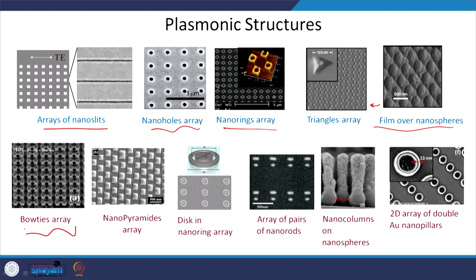A bowtie antenna has two sharp triangular structures facing each other, giving very high electromagnetic field between them. Nano pyramids also have enhanced electromagnetic fields at the tips. Disks in nano ring arrays are another option. The key point is that it is possible to develop a variety of nanostructures using silver and gold with different optical properties. By making different structures, you can tune the optical properties in a desired way.